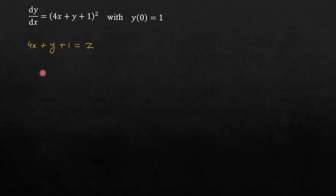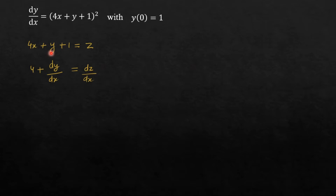Now differentiate both sides with respect to x. So it will come out to be 4 plus dy by dx is equal to dz by dx. Differentiation of 4x is 4, differentiation of y is dy by dx, differentiation of 1 (that is constant) will be 0, and differentiation of z is dz by dx.